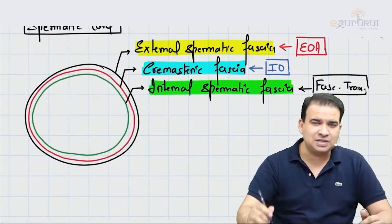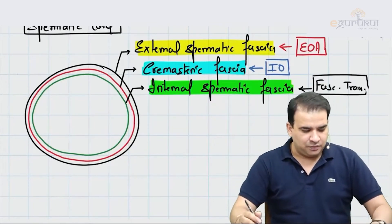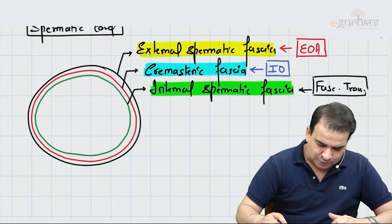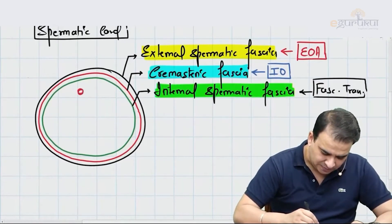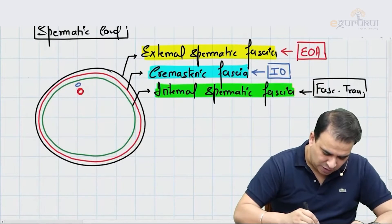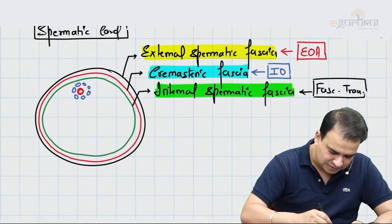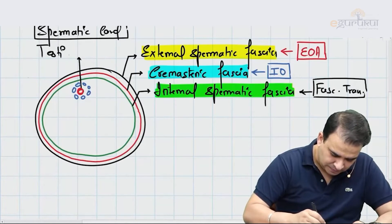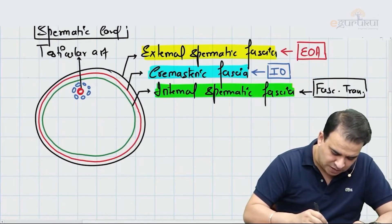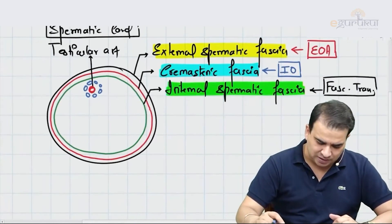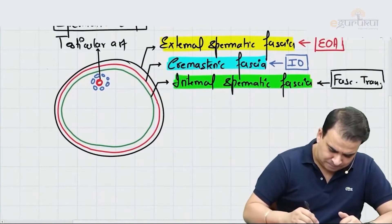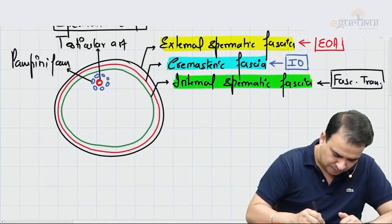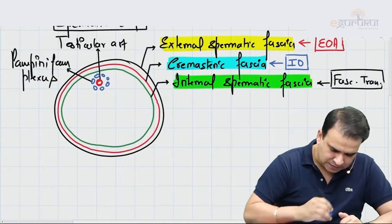So these are the layers of the spermatic cord. The important thing is where they are coming from — what fascia or muscle on the abdominal wall continues down to form these layers. Now looking at the contents, since it is a spermatic cord, one important content is the testicular artery, which is surrounded by a venous plexus called the pampiniform plexus — a sieve-like plexus. The testicular artery is a direct branch from the aorta.